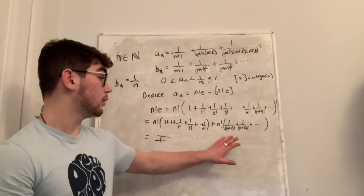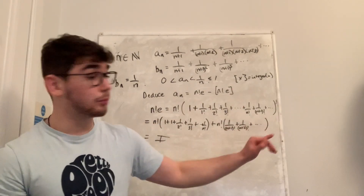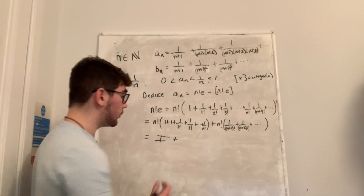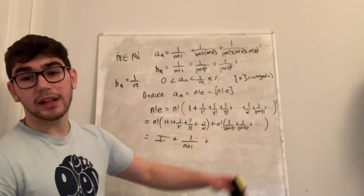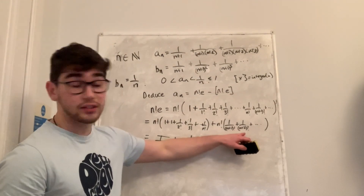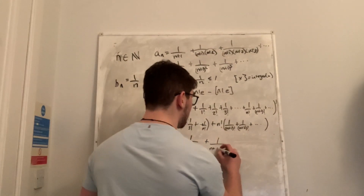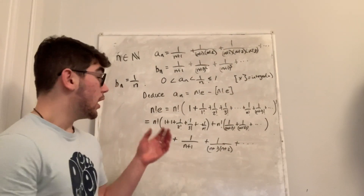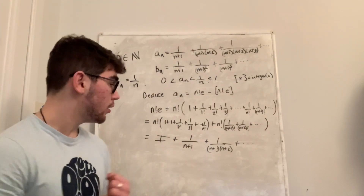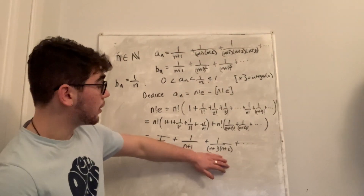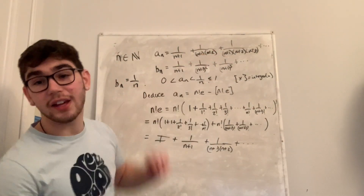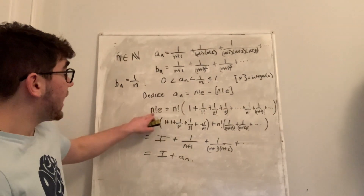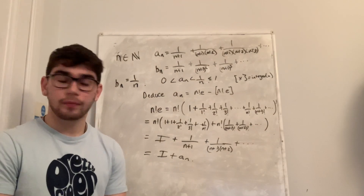For the second part, distributing n! into the tail: n!·1/(n+1)! = 1/(n+1), and n!·1/(n+2)! = 1/((n+1)(n+2)), and n!·1/(n+3)! = 1/((n+1)(n+2)(n+3)), and so on. That is precisely aₙ. So we've shown n!·e = I + aₙ, where I is an integer.